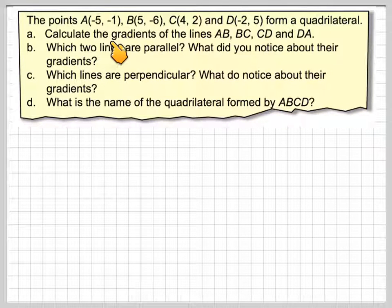The points A(-5, -1), B(5, -6), C(4, 2), and D(-2, 5) form a quadrilateral.